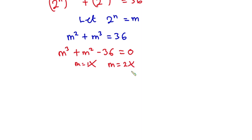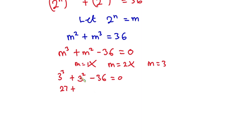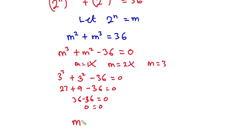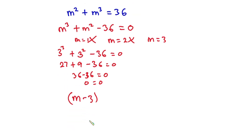Now let's test m equals 3. We have 3 cubed plus 3 squared minus 36. That is 27 plus 9 minus 36, which equals 36 minus 36, and this is equal to zero. So m minus 3 is a root of this problem.